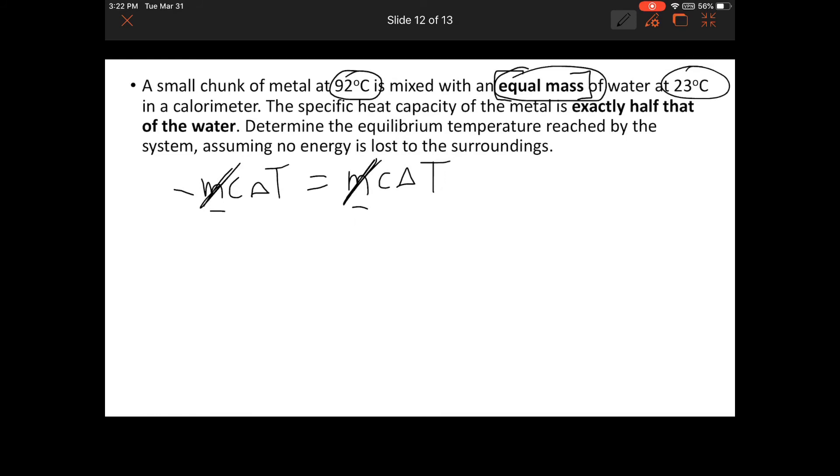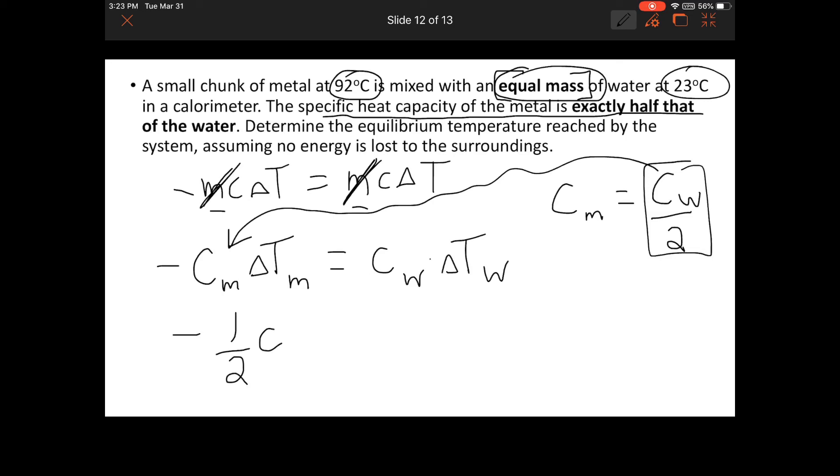Now I'll add subscripts to differentiate these. Negative specific heat capacity of the metal times temperature change of the metal equals specific heat capacity of the water times temperature change of the water. The specific heat capacity of the metal is half of water's, so C_metal equals C_water divided by 2. Substituting that in, I get one-half C_water times delta T_metal equals C_water times delta T_water. The C_water cancels from both sides.